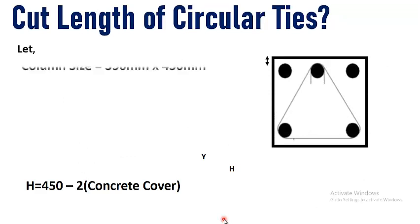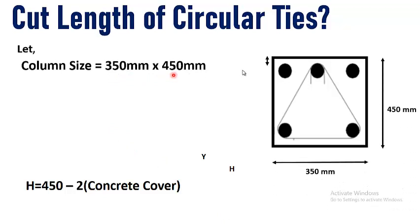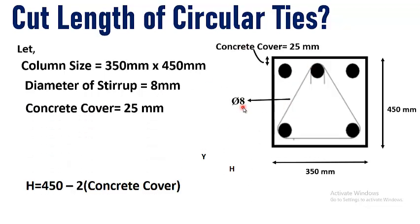Let's say we have a column and its dimensions are 350 mm by 450 mm, that is one dimension is 450 mm and other dimension is 350 mm. The stirrup we are using is of a diameter of bar 8 mm and concrete cover or clear cover is 25 mm.